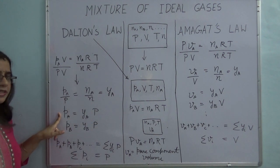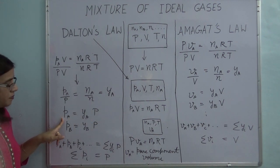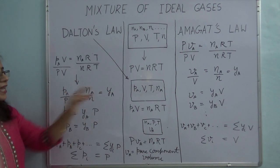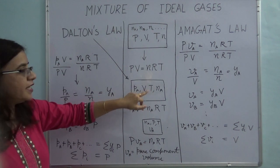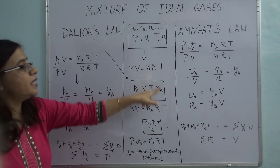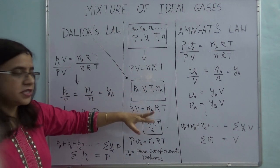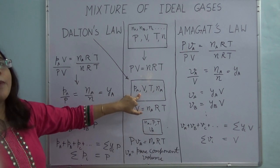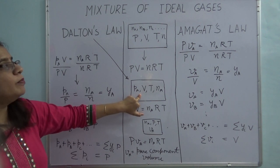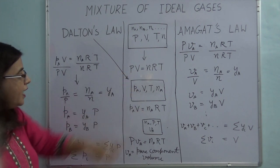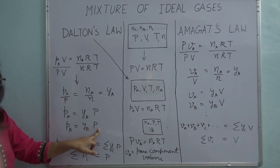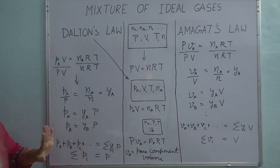I can rearrange this equation and write it as PA = Ya × P. Similarly, I can do the same for component B and component C — take them alone in the same volume at the same temperature — and arrive at: PB = Yb × P, PC = Yc × P, and so on.